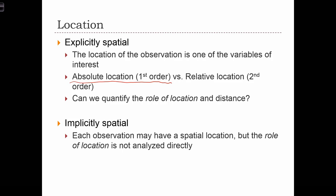So in geographic data, say we have locations of waterfalls in the United States — for each of these waterfalls, we are going to store some location data, and that's often in the form of an x, y coordinate. So the x and y coordinates are variables in our data set that are describing the location of each observation.